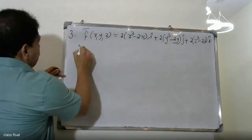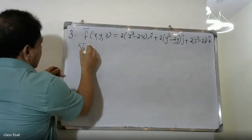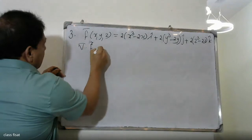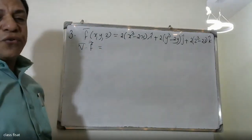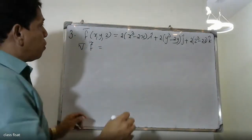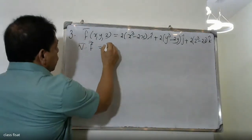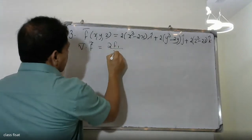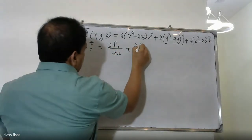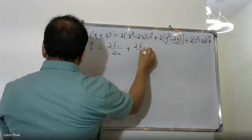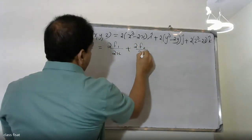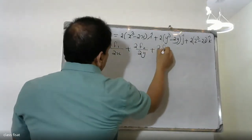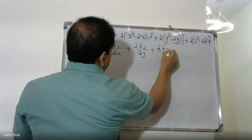We compute del dot f. The formula for divergence is: ∂F₁/∂x + ∂F₂/∂y + ∂F₃/∂z.